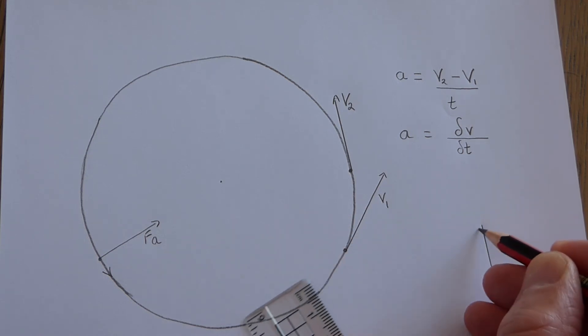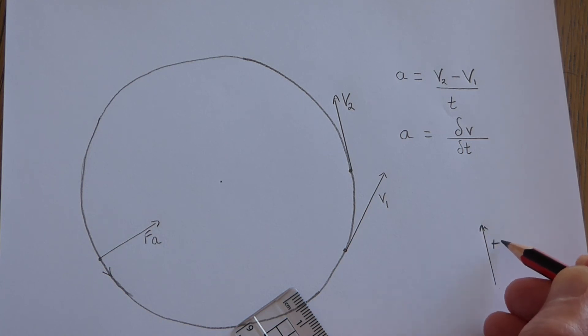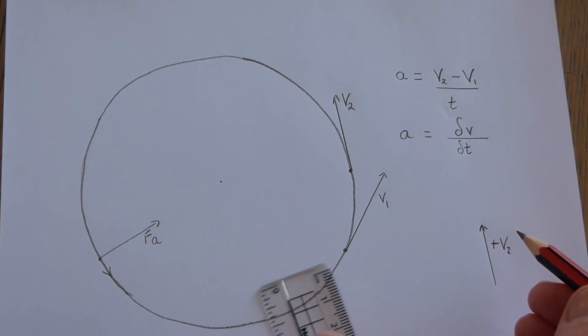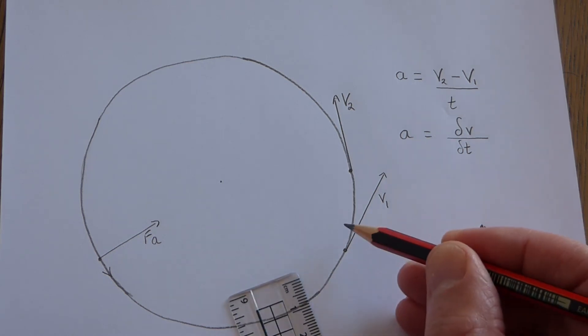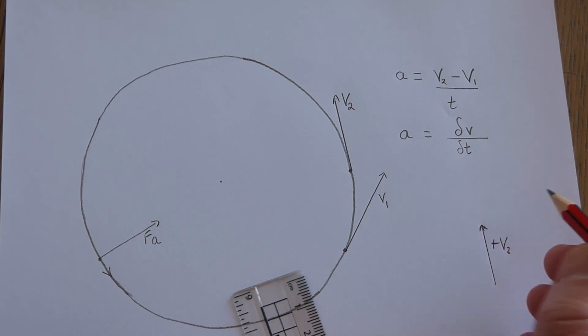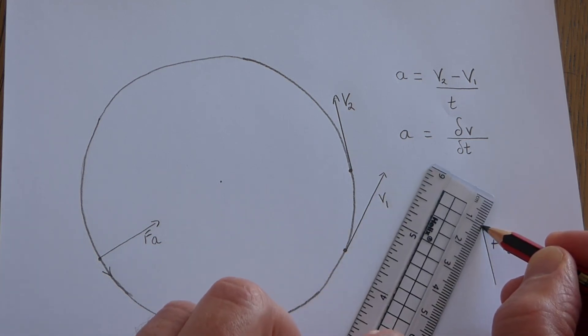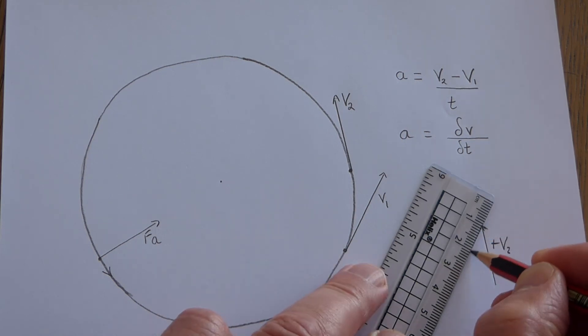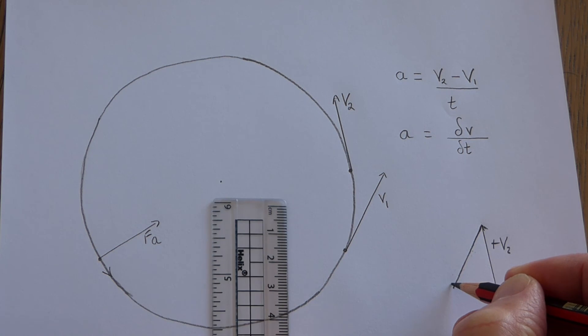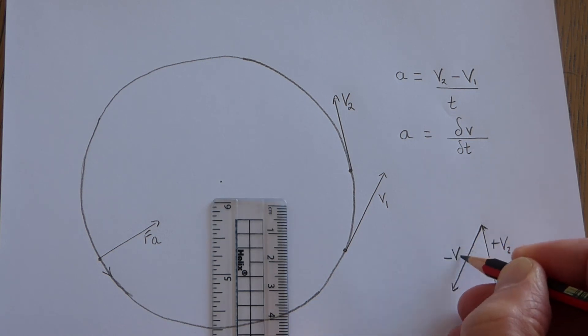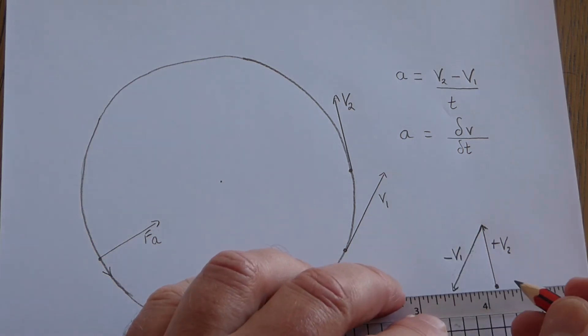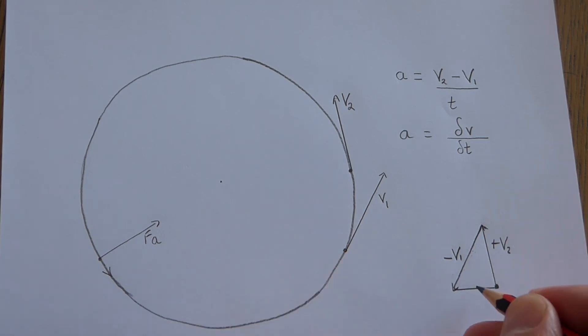Then, instead of going up to the right where v1 is going, we can draw a negative version of v1 by going in exactly the opposite direction. If you draw your vector in the opposite direction, that is the negative version. If you go from the beginning of your diagram to the end, that arrow gives you the overall vector, which is v2 minus v1. You can see it's a line you could measure and calculate.